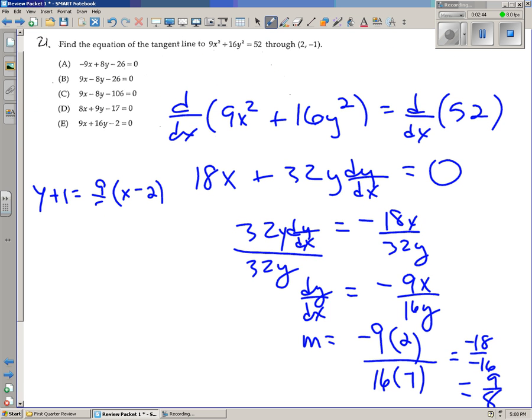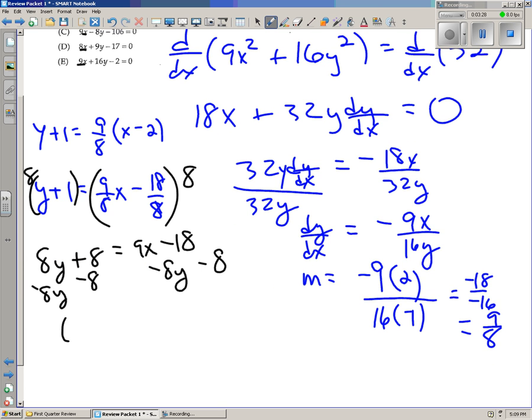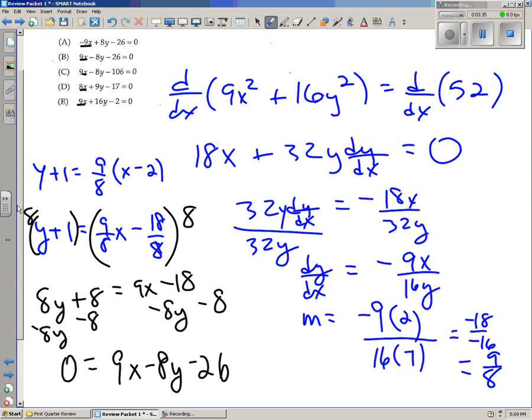So if we get 9 eighths as the slope, but we want it in this format, so we're going to have to distribute and play around here. So we have y plus 1 is 9 eighths x minus 18 over 8 for now because we're going to have to end up multiplying out by the 8 anyway. So if I multiply both sides by 8 here, we will get 8y plus 8 is 9x minus 18. And we want everything over to the side where the x is. If you notice, we're starting off with a positive 9x. So I will subtract 8y and I'll subtract 8. And so we end up getting 0 is equal to 9x minus 8y minus 26, which is the same thing as choice B.